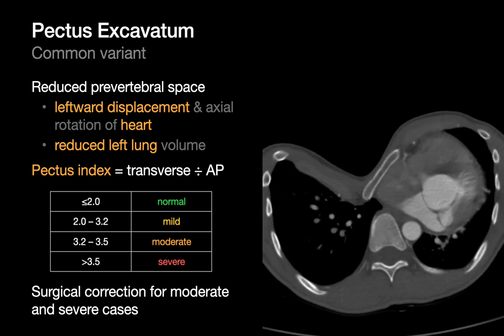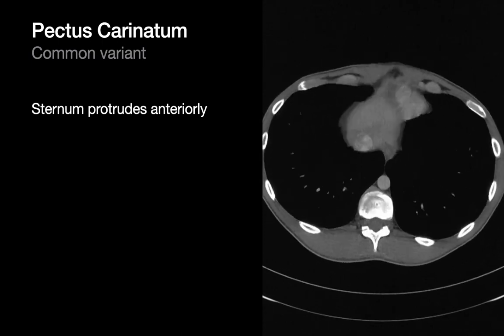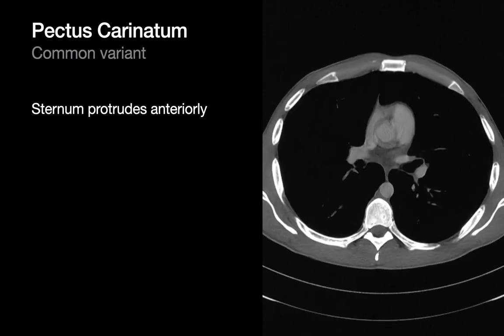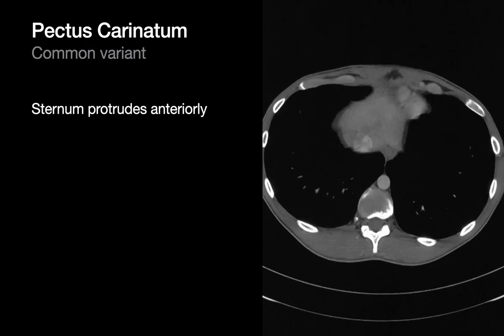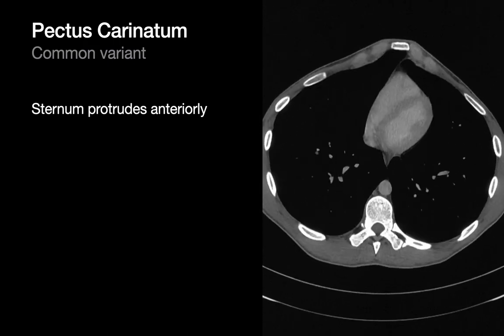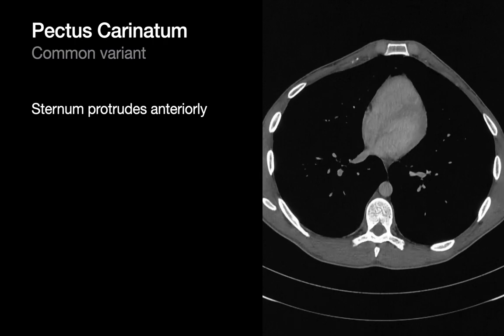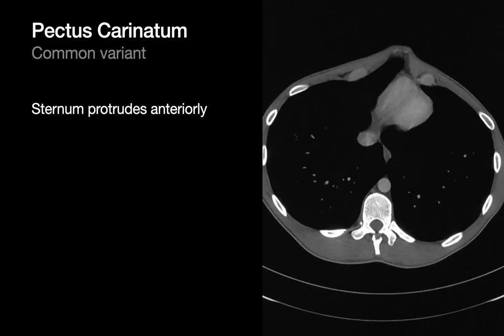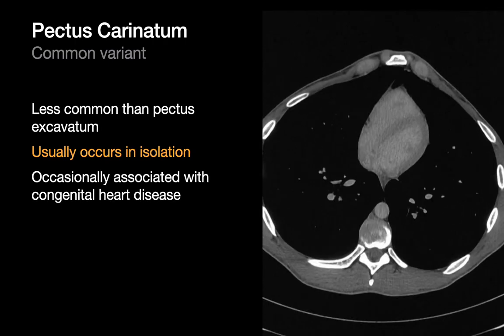Pectus carinatum is the inverse of pectus excavatum — in carinatum, the sternum protrudes anteriorly. An older term for this disorder was pigeon chest, which interestingly shares the same initials as pectus carinatum. Pectus carinatum is less common than excavatum and usually occurs in isolation, though a small number of cases have been reported associated with congenital heart disease.